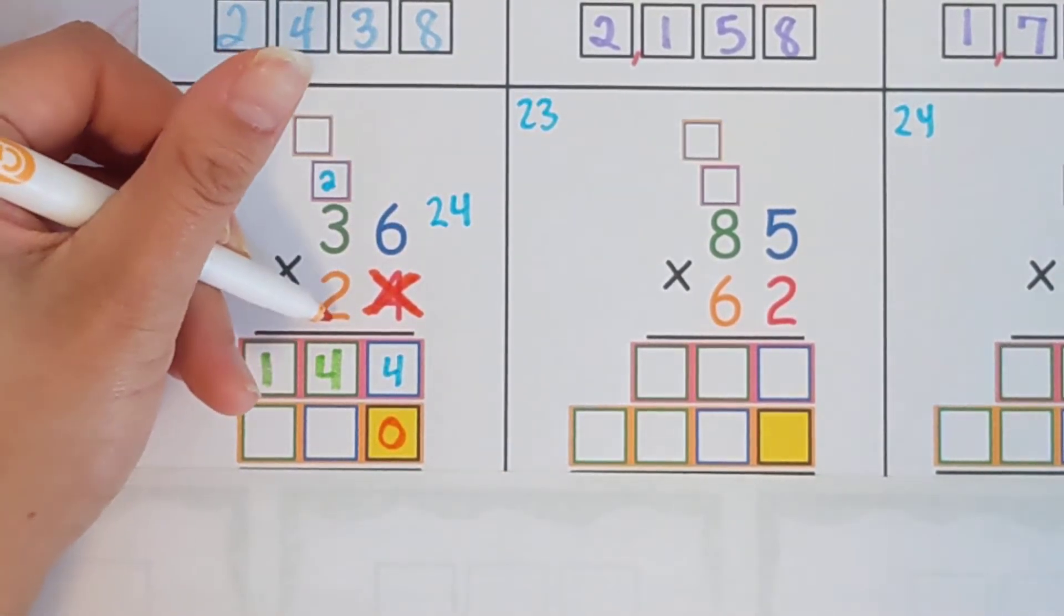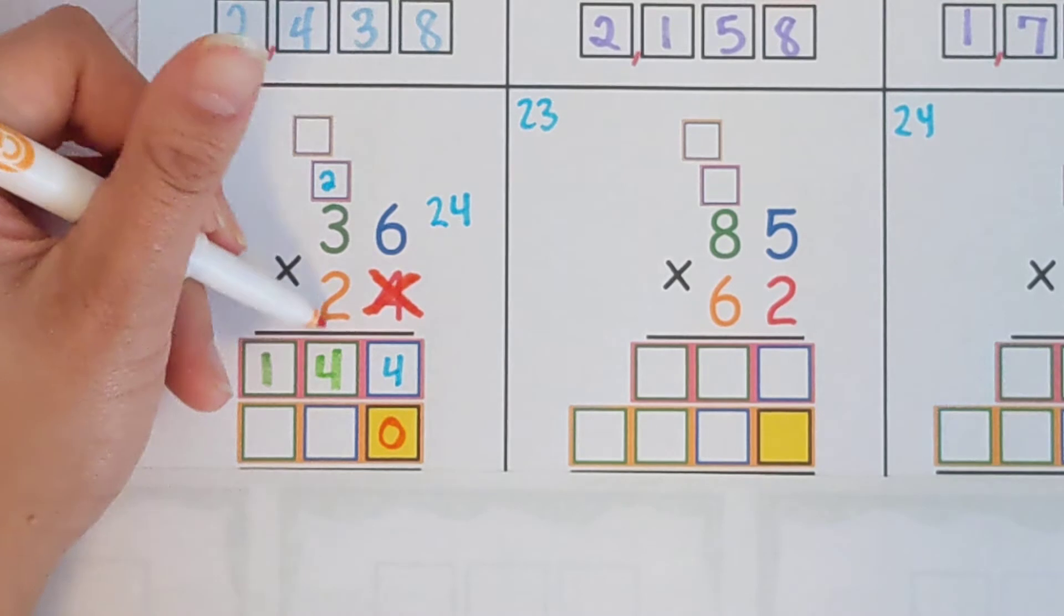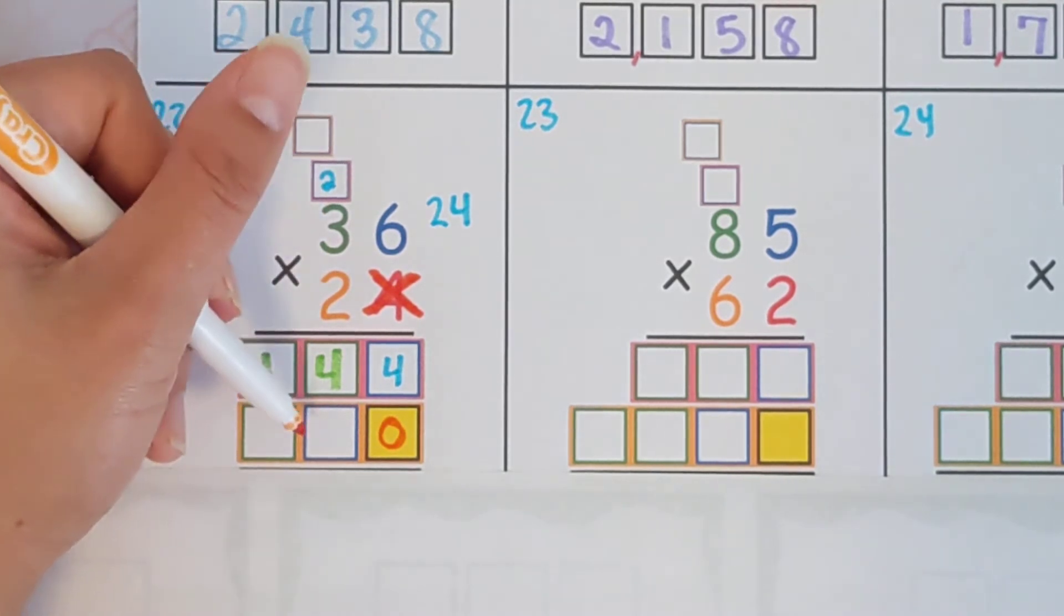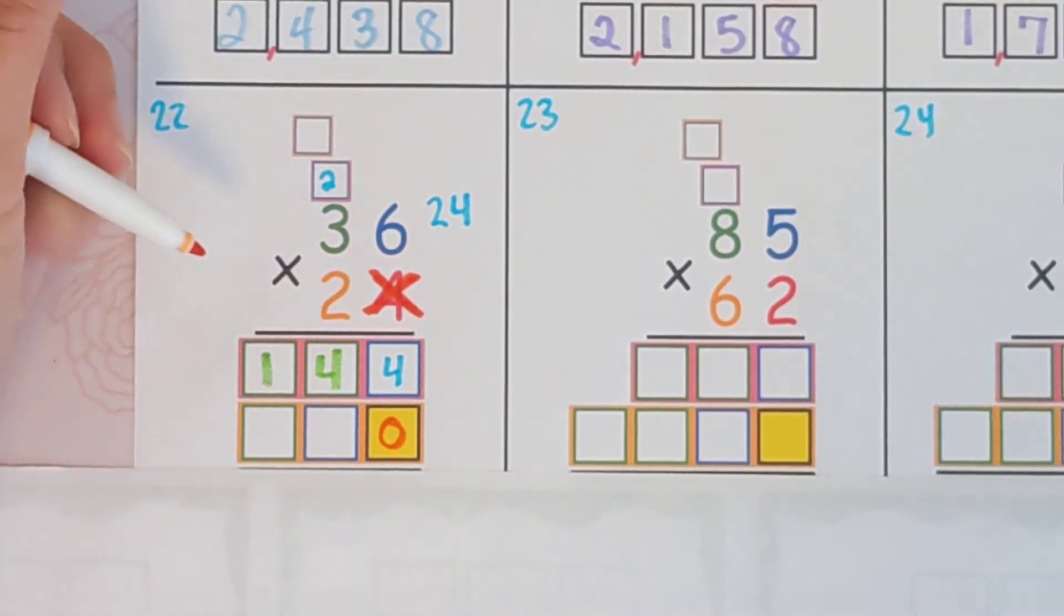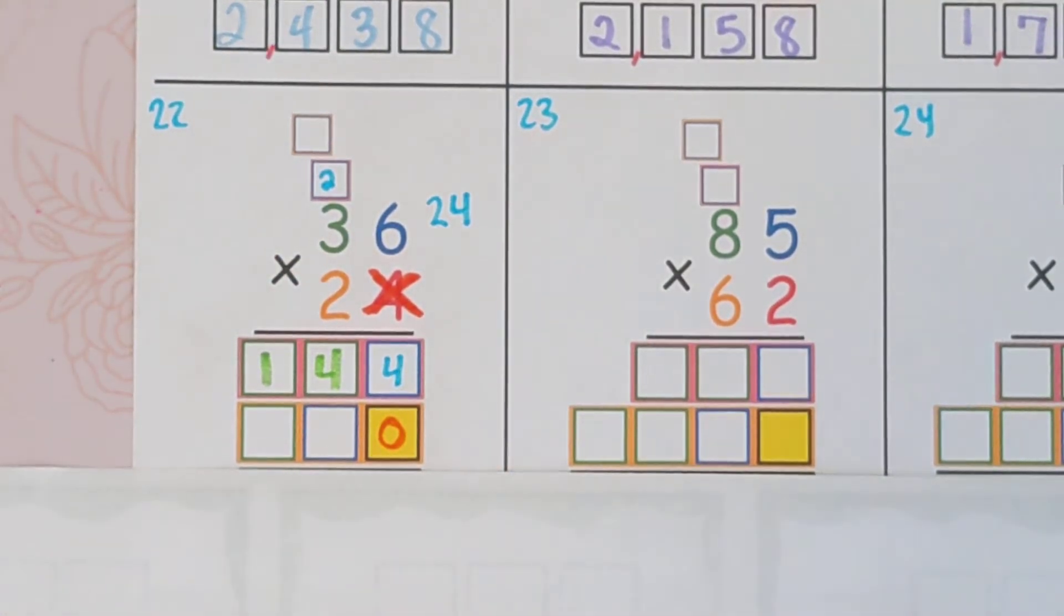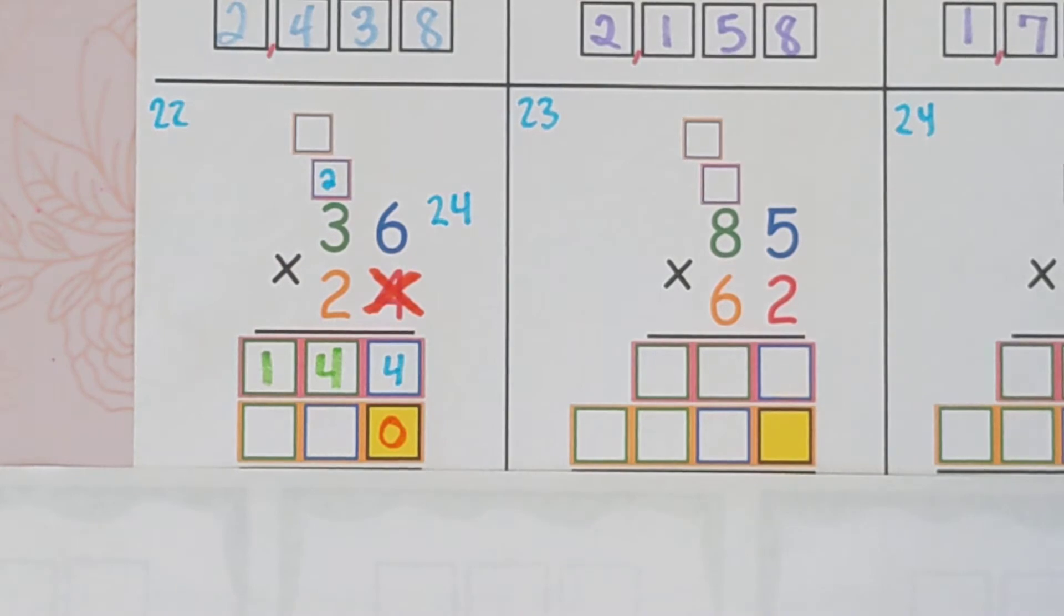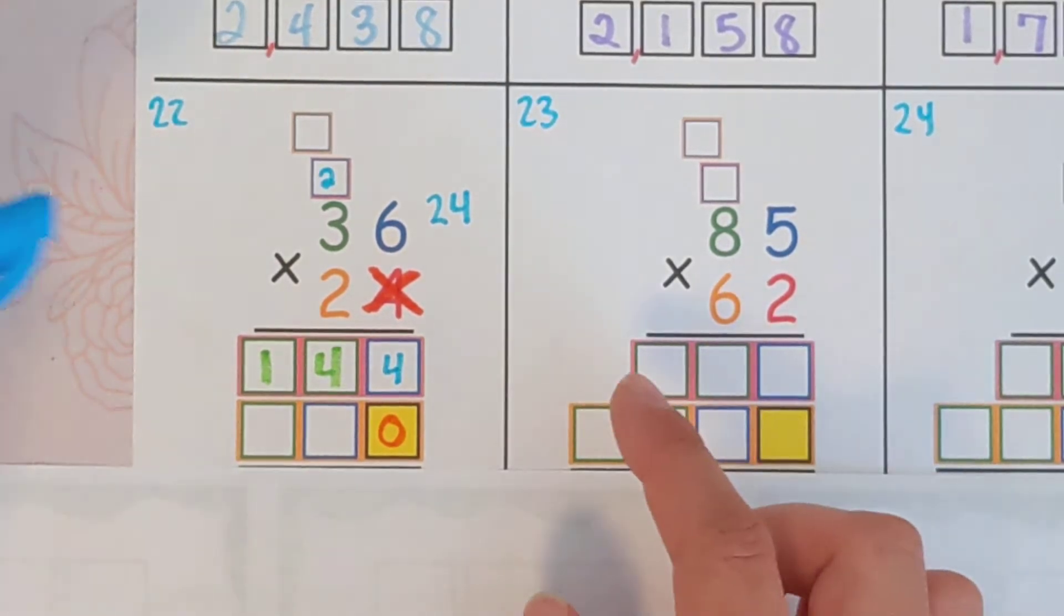And that bumps us up to show, hey, this two is actually worth more because it's in this column, the tens column. So you put a zero and now you're going to do 20 times 36. But really, you just have to do two times 36 because you already stuck the zero in there.